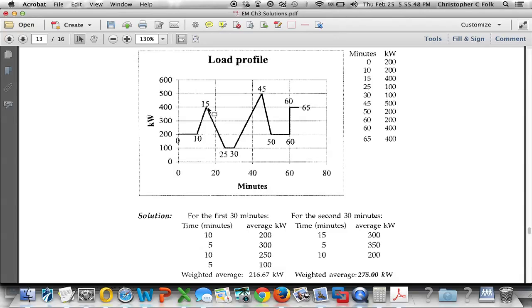Well, if I add together 200 plus 400 and divide it by 2, that shows me I have an average of 300 kilowatts. Now, if I go from time 15 to time 25, that's 10 minute period of time. Sure enough, it shows me that 10 minutes right here.